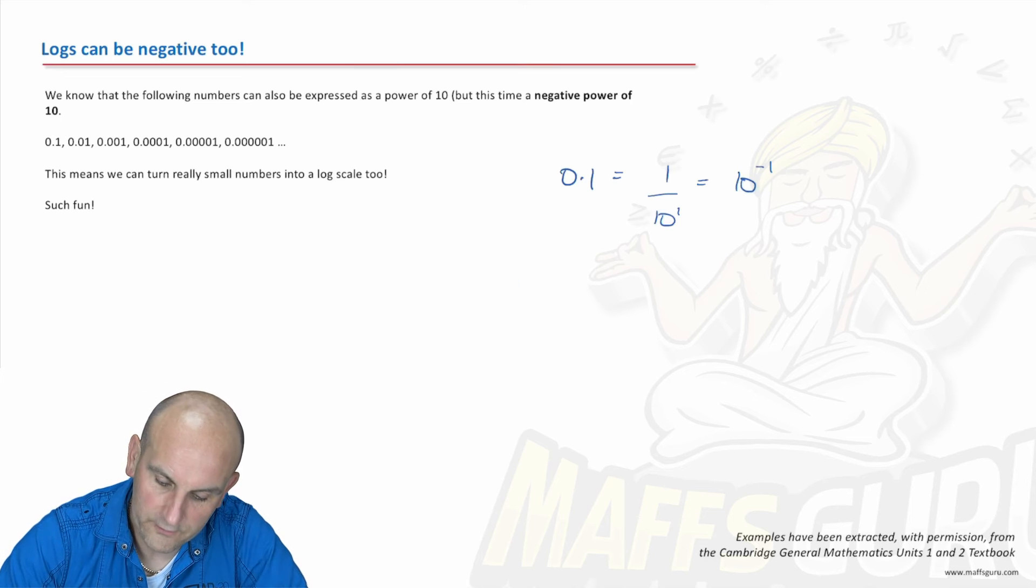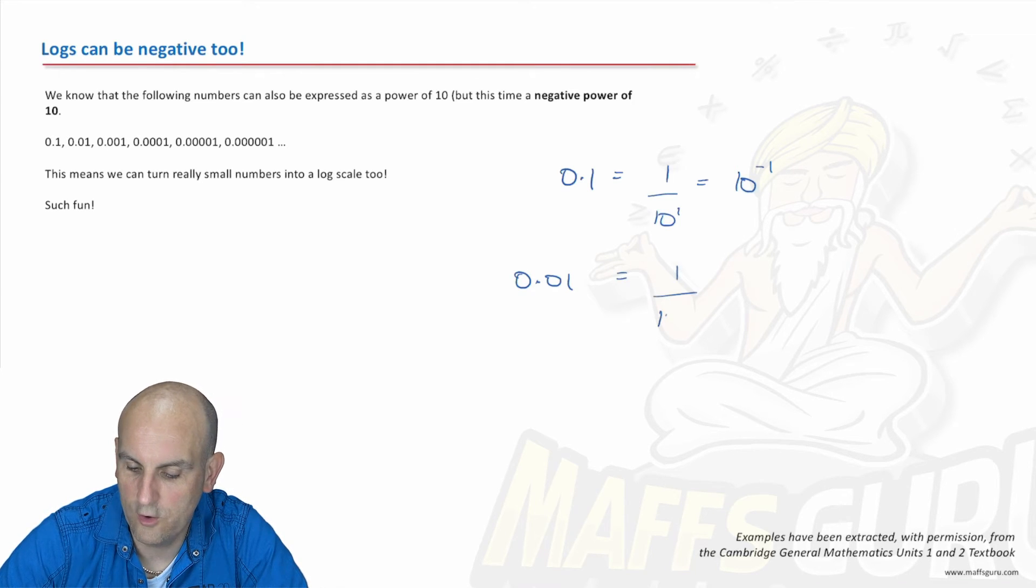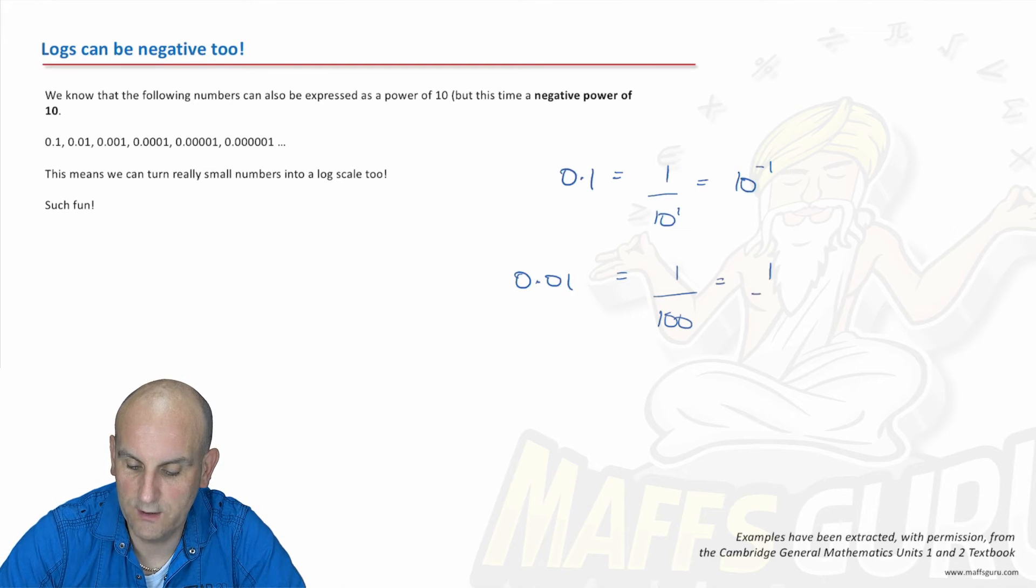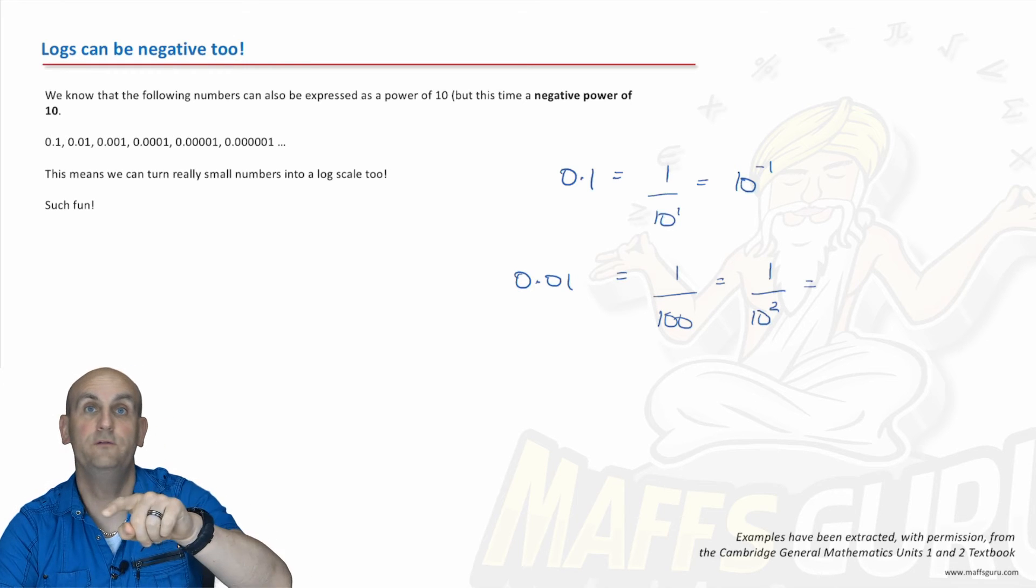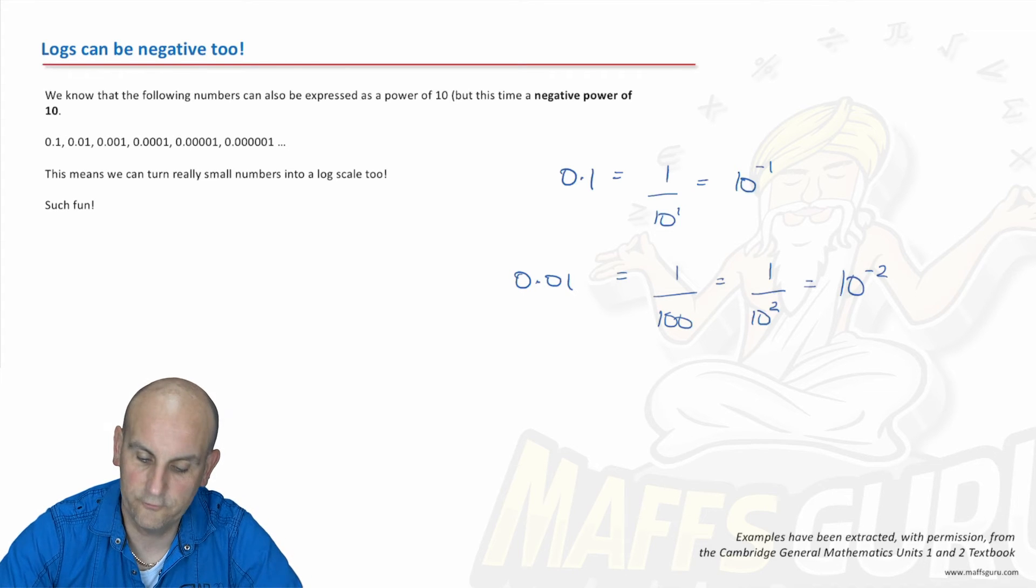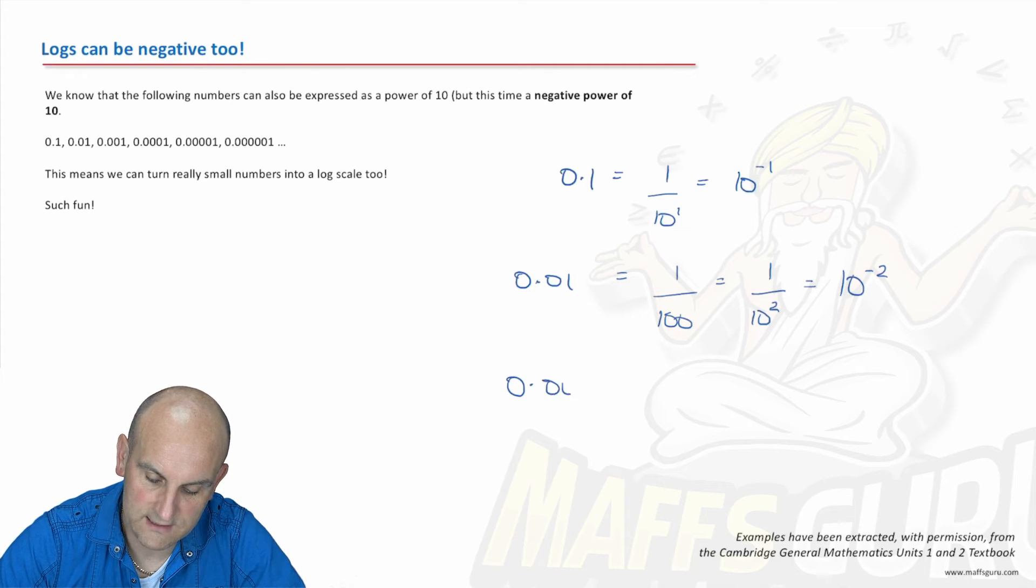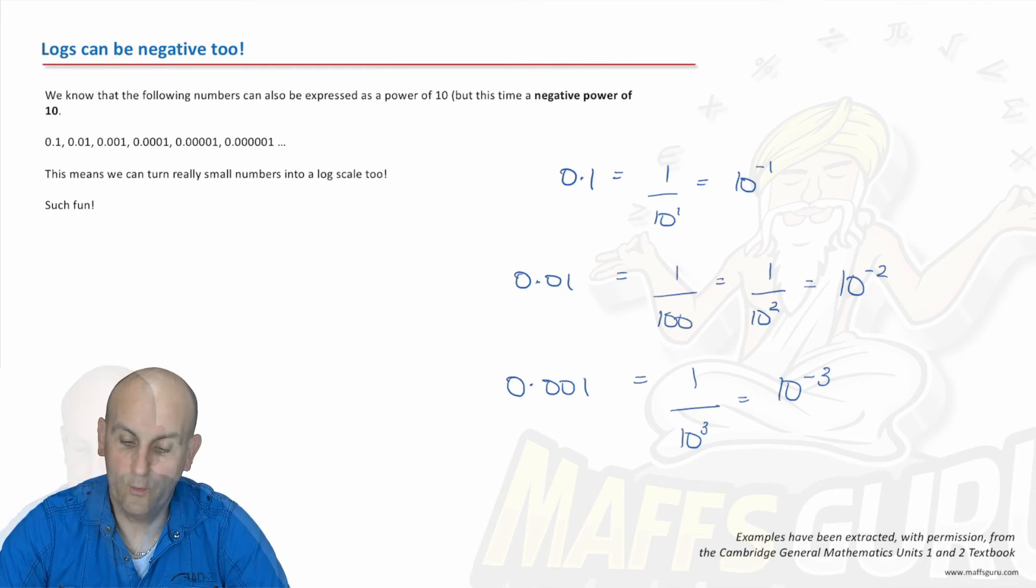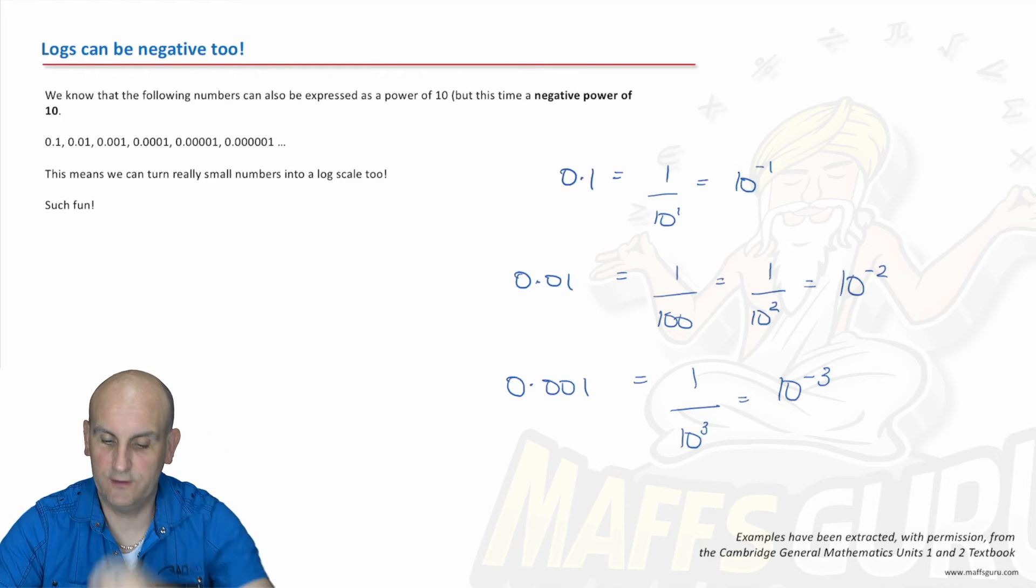I'll show you again. So 0.01 is actually the same as 1 on 100. See what we're doing now? So that is actually 1 on 10 squared, and because I have a floaty number, I can move that up to the top, and that becomes 10 to the floaty minus 2. And 0.001 is 1 on 10 cubed, which is the same as 10 to the minus 3.